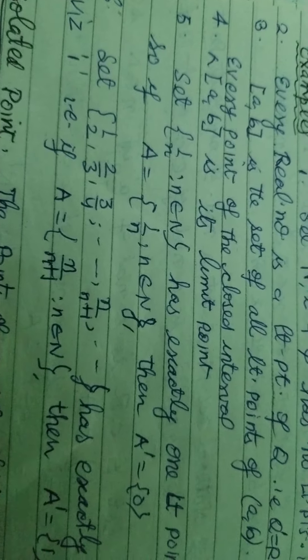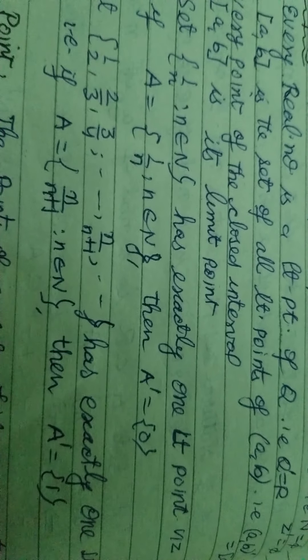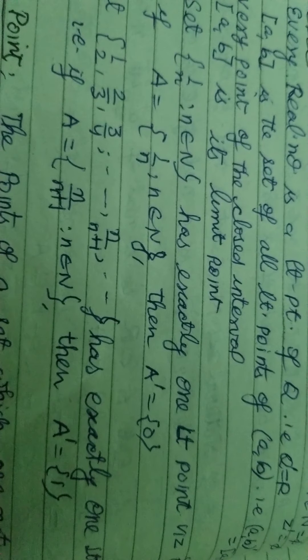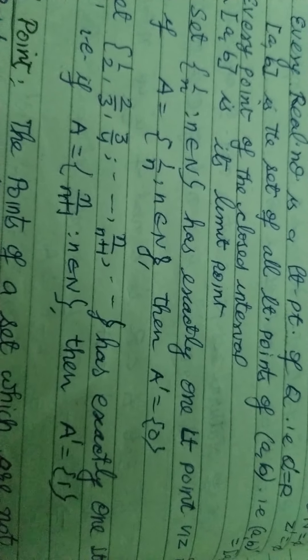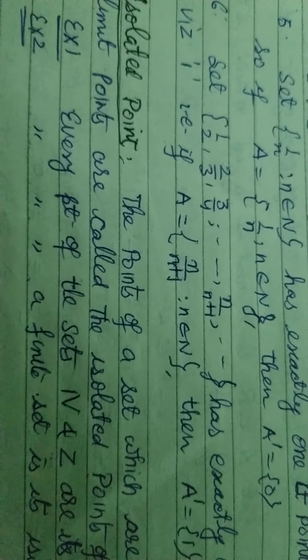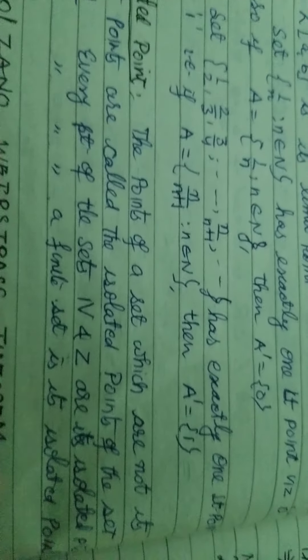Another example: the set {1/2, 2/3, 3/4, ..., n/(n+1)} where n is a natural number has exactly one limit point, which is 1. So the derived set of A contains only one element, the number 1. This is our derived set.